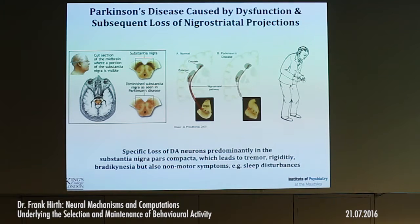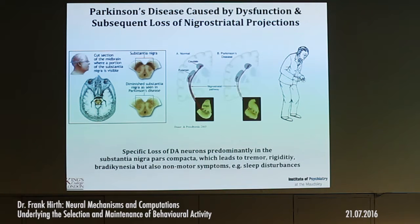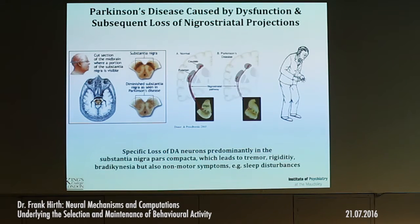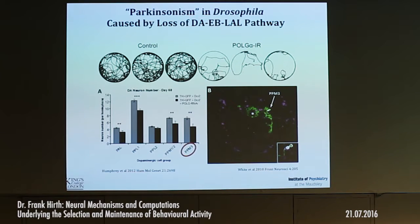I want to show one case: Parkinson's disease. Here is the substantia nigra, and you have a very specific loss of dopaminergic neurons, which impairs the striatal-pallidal pathway. Parkinsonian patients are characterized by difficulties to initiate actions. Those people have problems initiating movement, and some use a trick — a stick with a laser pointer — and when they put a light in front of them, it helps. They need a trigger, a salient stimulus to overcome that. In Drosophila, we have artificially induced Parkinsonism by targeted impairment of mitochondrial function. The dopaminergic system in flies comes in clusters. These dopaminergic neurons very specifically project into the ring of the ellipsoid body and the lateral accessory lobe — the DA-EB-LAL pathway, analogous to the substantia nigra pathway.